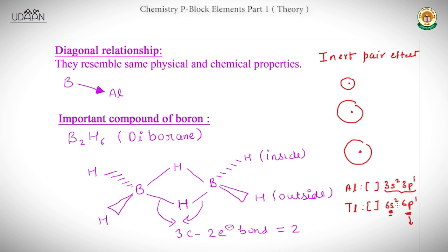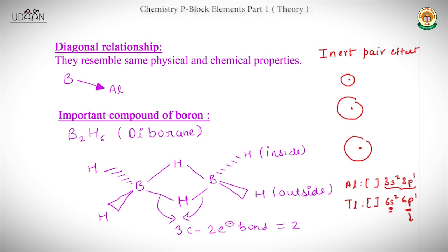Since the 6s² electrons cannot be removed from Thallium easily, the +3 oxidation state of Thallium cannot be easily formed. That is why the stability of the lower oxidation state increases going down the group — this is called the inert pair effect. The pair of electrons in the S orbital behaves as inert.